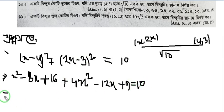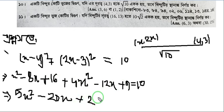Now combining like terms: x² plus 4x² gives 5x². Then minus 8x minus 12x equals minus 20x. And 16 plus 9 equals 25. So we have 5x² minus 20x plus 25 equals 10. Subtracting 10 from both sides gives 5x² minus 20x plus 15 equals 0.